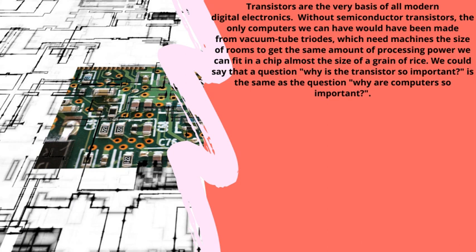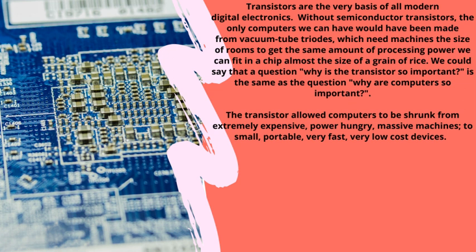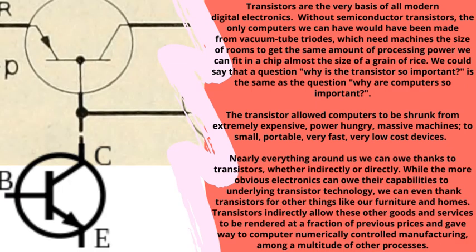Why is the transistor so important? Without transistors, the only computers we could have would be made from vacuum tube triodes, which need machines the size of rooms to get the same processing power we can fit in a chip almost the size of a grain of rice. The transistor allowed computers to be shrunk from extremely expensive, power-hungry, massive machines to small, portable, very fast, very low-cost devices.